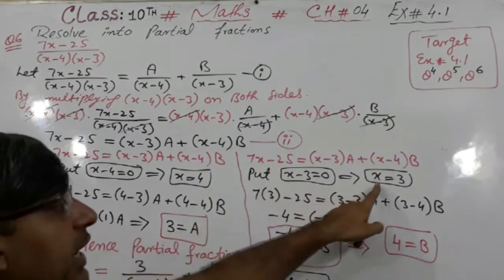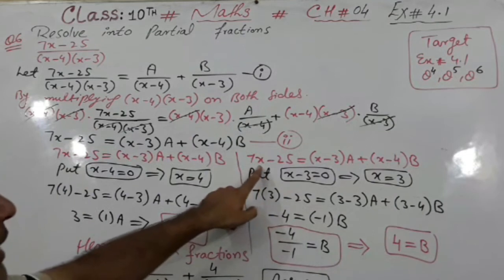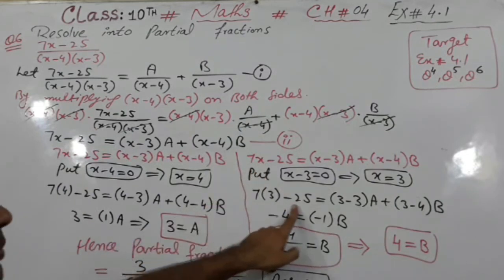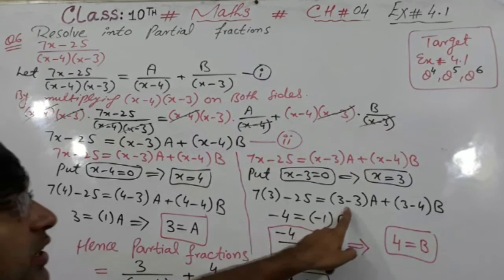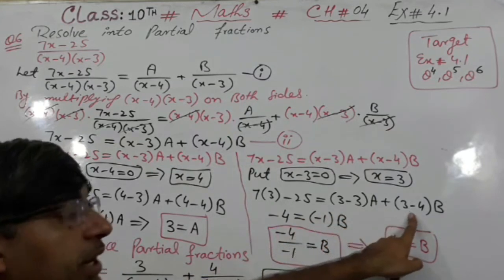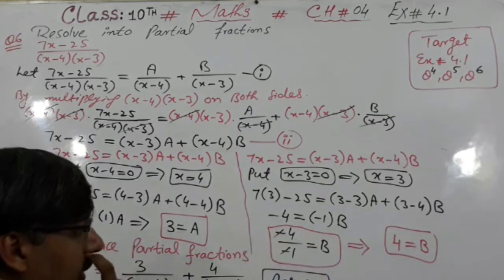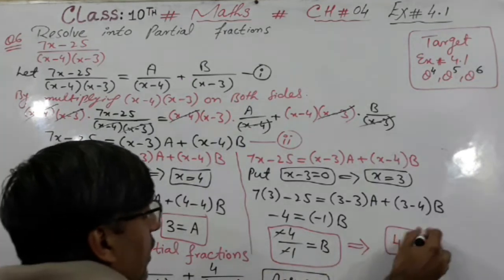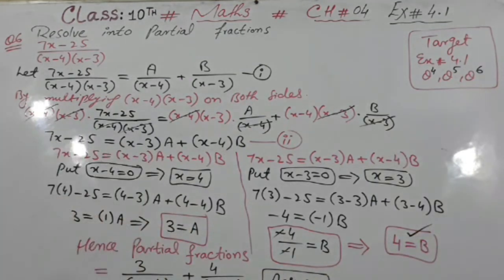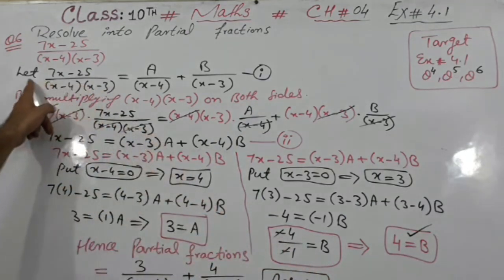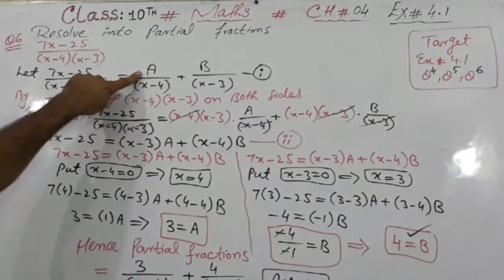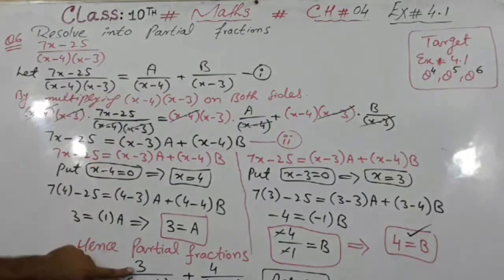Now the second value: putting x equals 3 — wherever x appears we substitute 3. Using the calculator, this gives minus 4 into B. 3 minus 4 gives minus 1 — minus 1 divides here, the negative signs cancel, and 4 divided by 1 gives B equals 4. Students, now we have both A and B. We put A equals 3 and B equals 4 into equation 1.